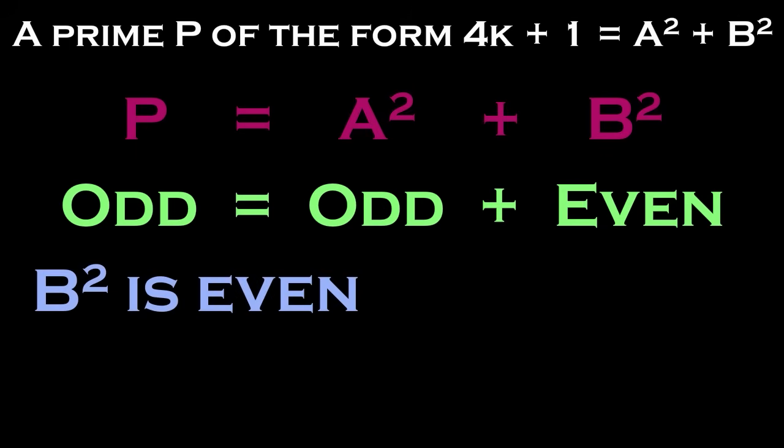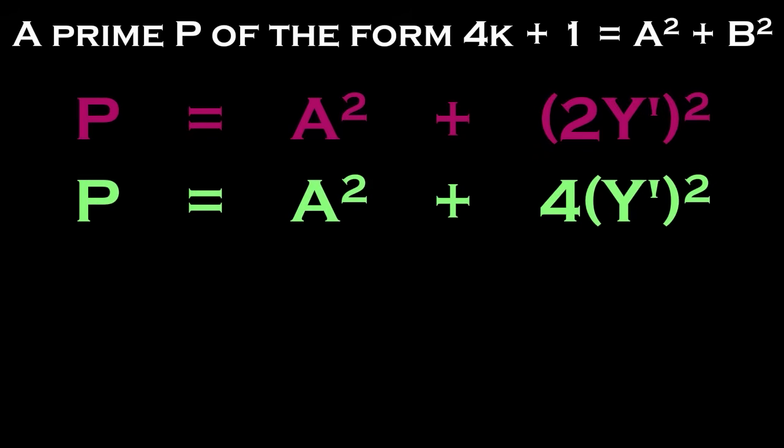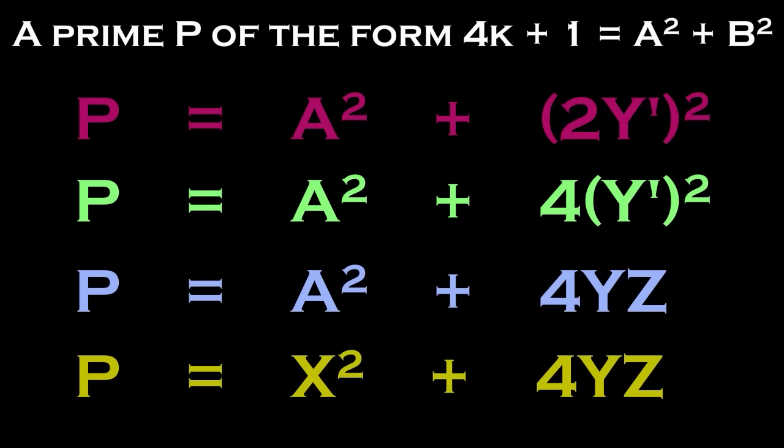Since an odd number squared is odd, and an even number squared is even, then b itself must be even, so we'll replace b with 2y prime. We can then factor out the two to get 4y prime squared. Finally, I'll replace y prime squared with yz, which we'll see why in a second. I'll also change a squared to x squared to really highlight this new formula.